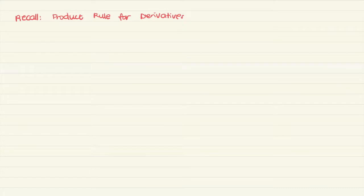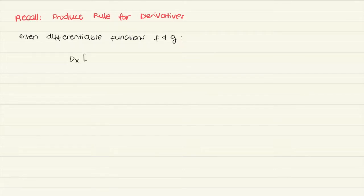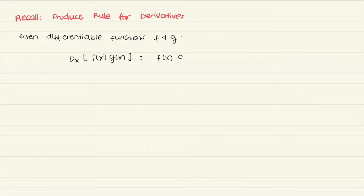What is our formula? So if we are given two differentiable functions f and g, then the derivative of the product f times g will be equal to f times the derivative of g plus g times the derivative of f.